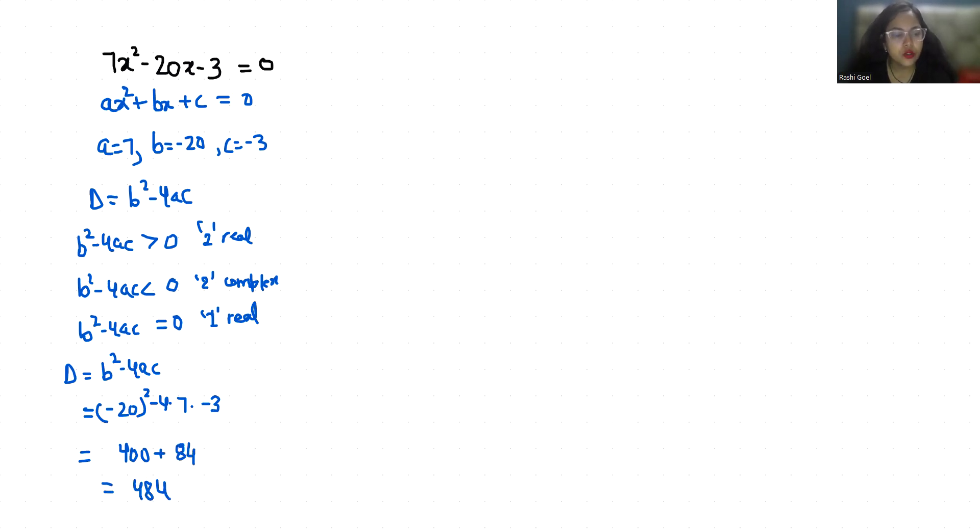Let's find out the real solutions. Method one: 7x square minus 20x minus 3 equals 0. I am going to use the quadratic formula: minus b plus minus under root b square minus 4ac, all divided by 2a.